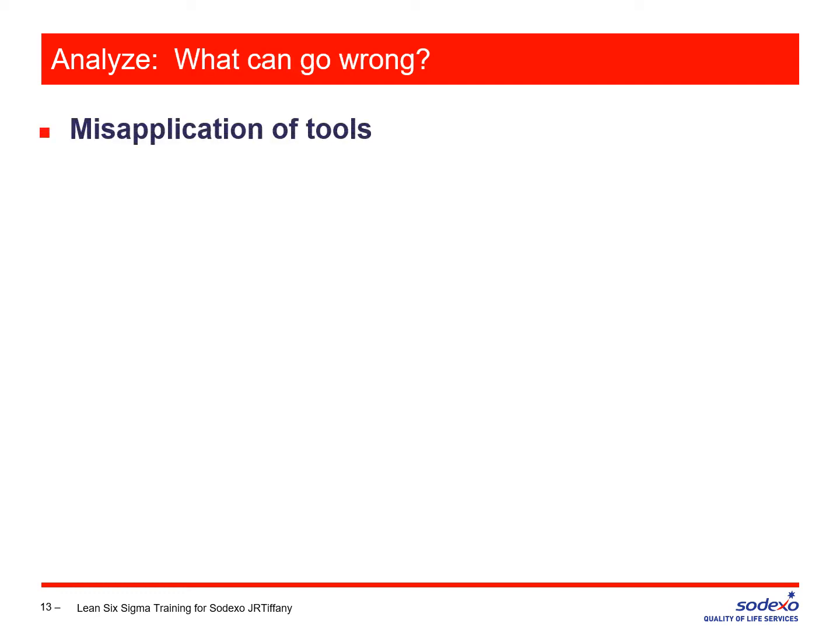What can go wrong with the analyze step? You might use tools wrong. A lot of people have a favorite tool and try to apply it to every problem — it might not be the best approach. People make errors, especially in some of the statistics. It's easy to make errors through data entry or by using an incorrect method or a common software package. Software makes mistakes. Whatever you do statistically, ask somebody to check your work.